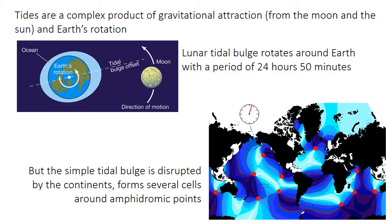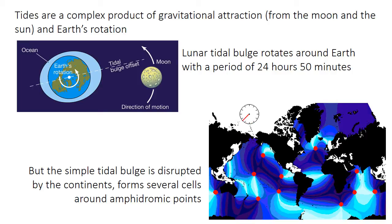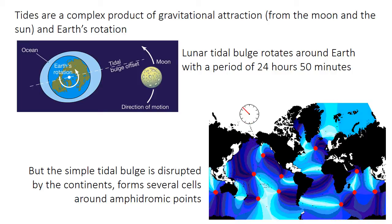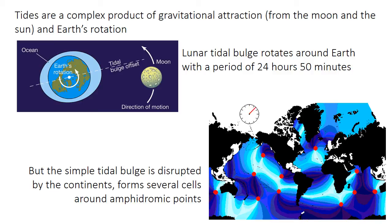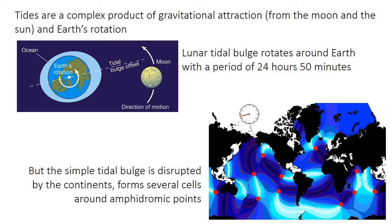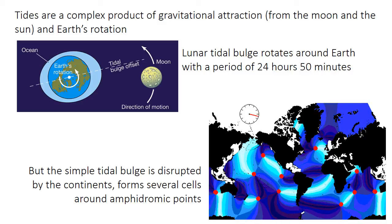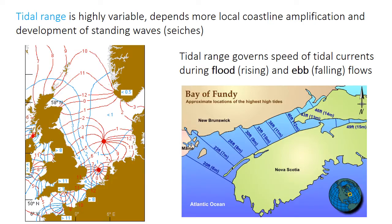Tides are produced by the gravitational attraction from the moon and the sun pulling on the ocean water. The Earth's rotation affects the position of this bulge of water, so the tidal bulge rotates around the Earth a bit longer than once a day. The Earth has continents that get in the way, so there are actually a bunch of tidal waves, these bulges, rotating around points called amphidromic points.